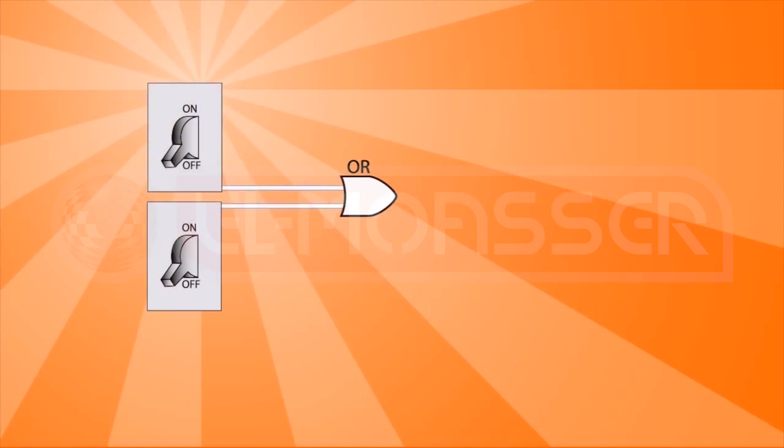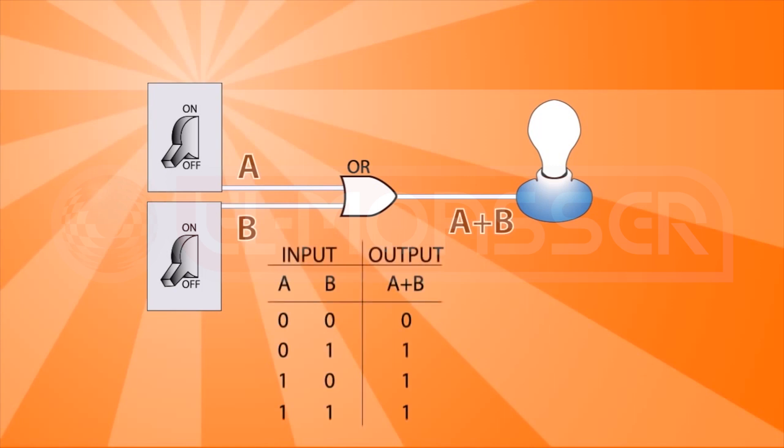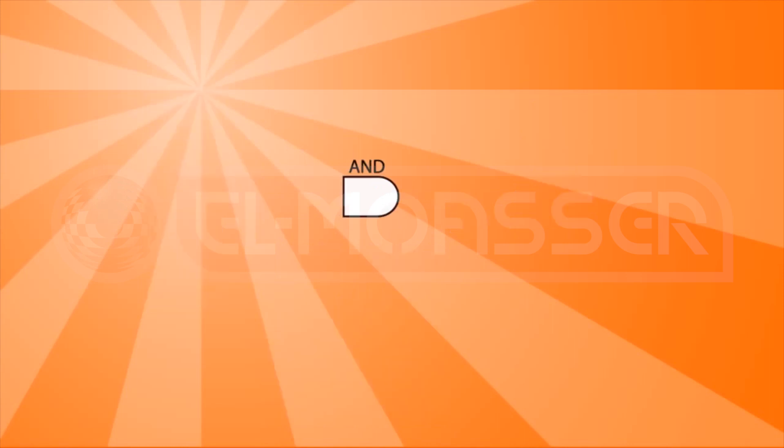This is the OR gate. It has two inputs, A and B, and the behavior of the output, called A or B, is one if any or both of the inputs is one. If A is one, B is one, or both is one, then the output is one. If both is zero, then the output is zero.